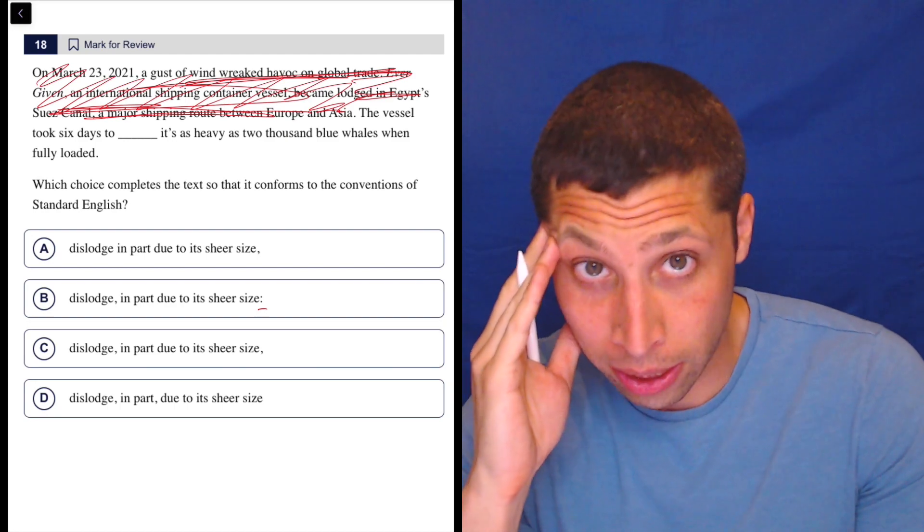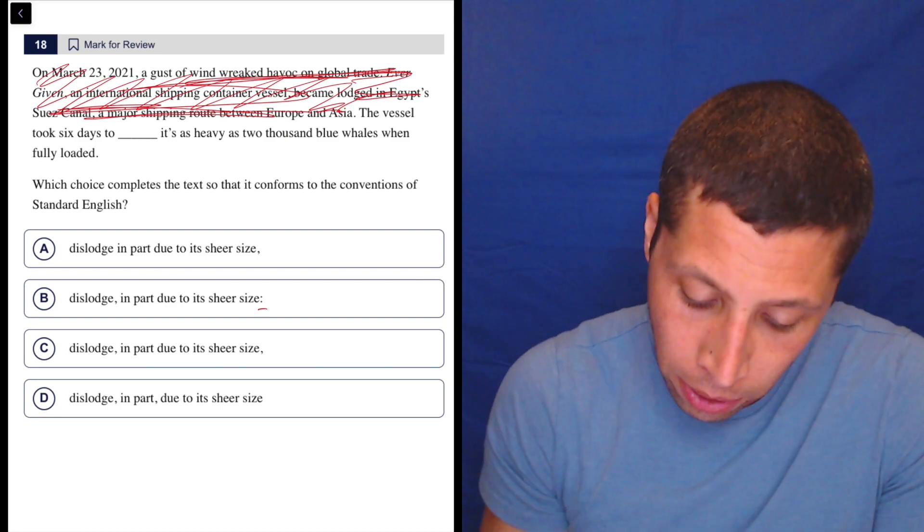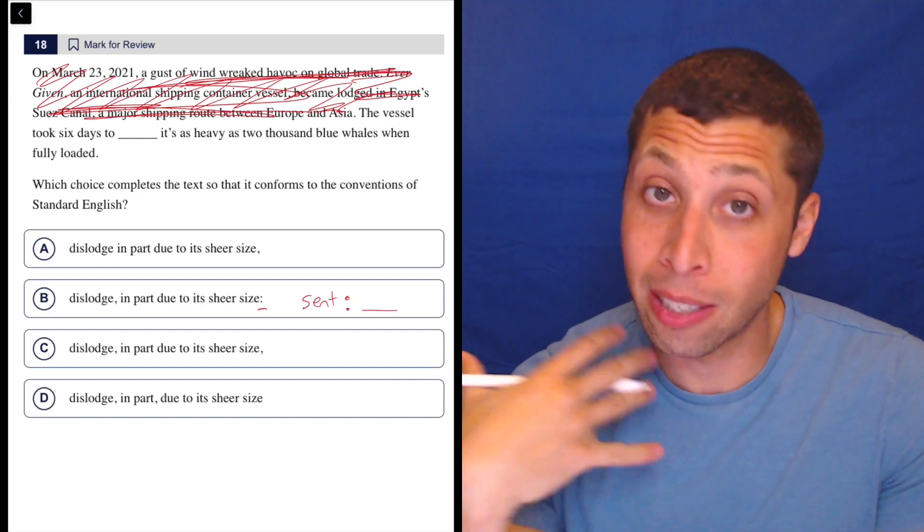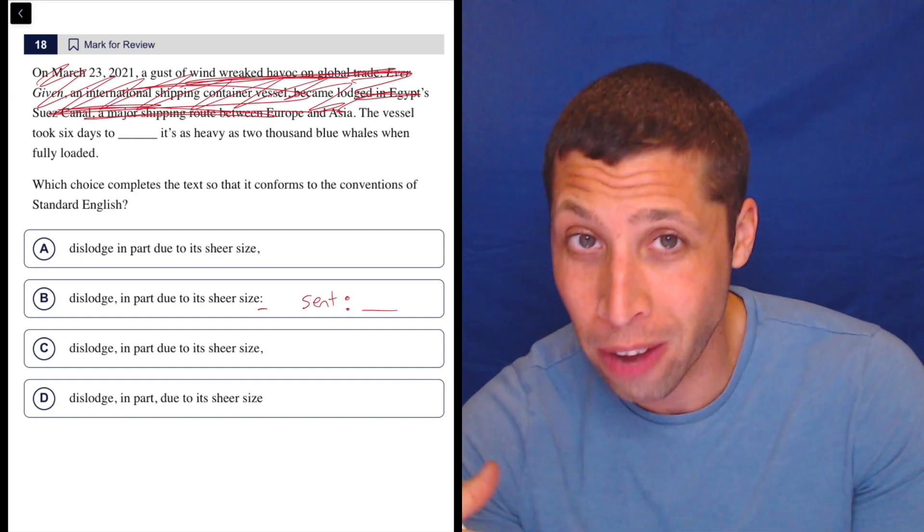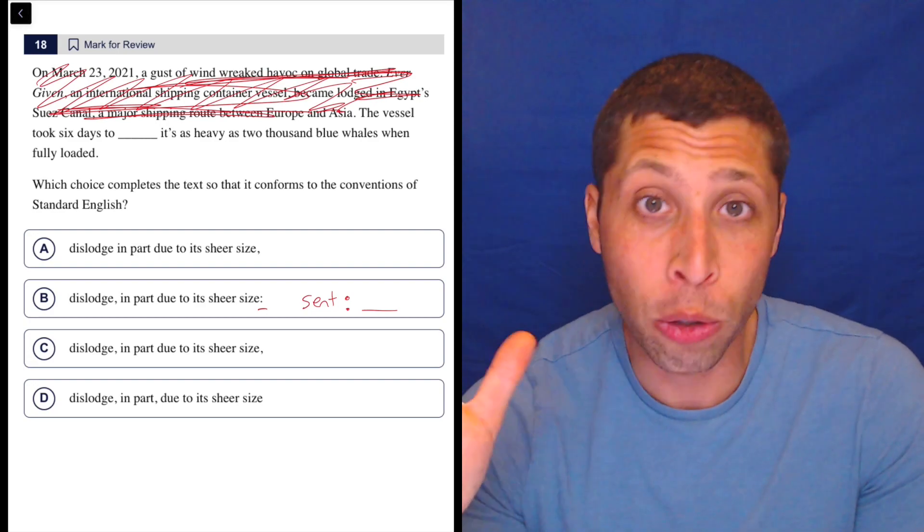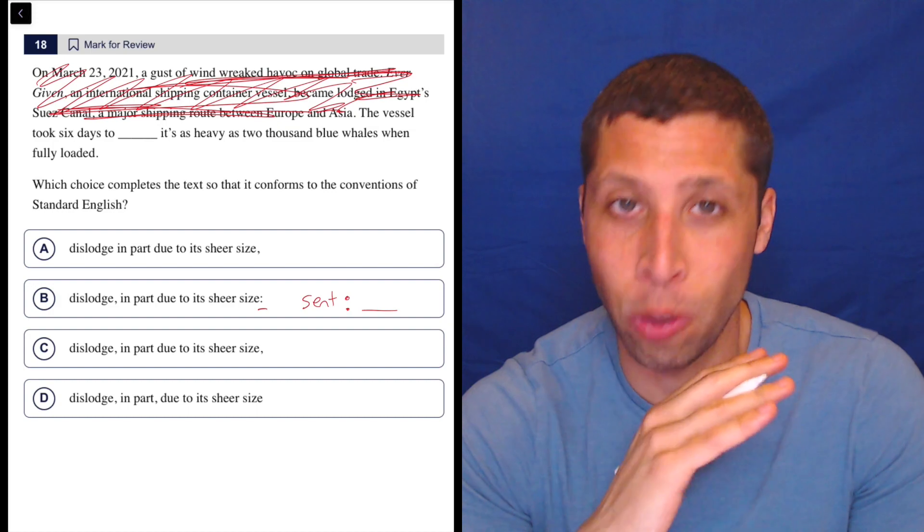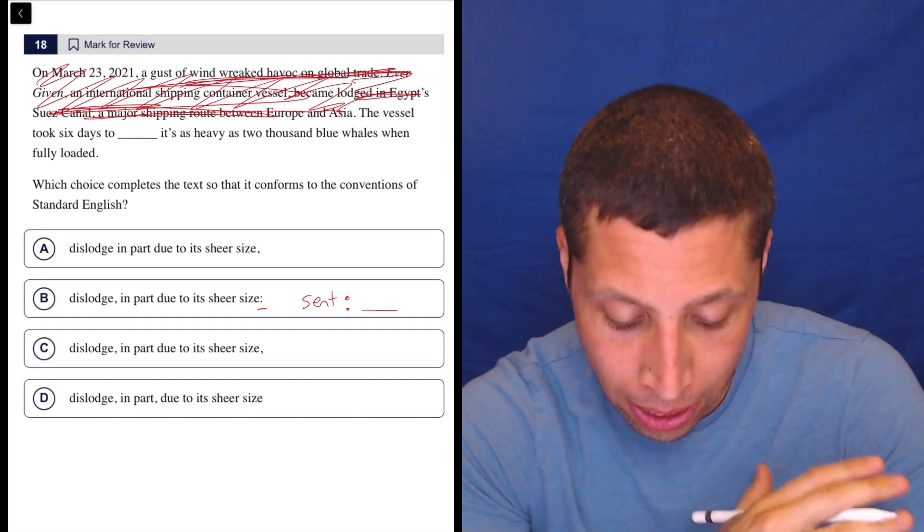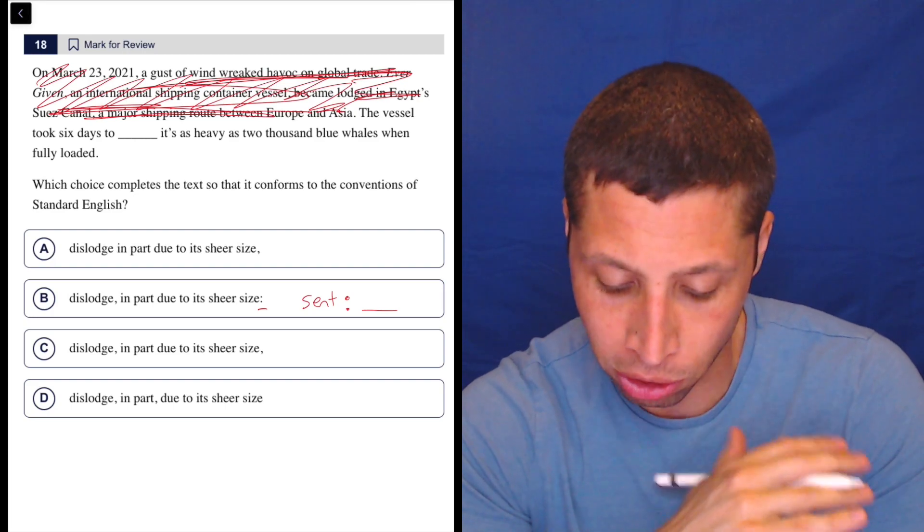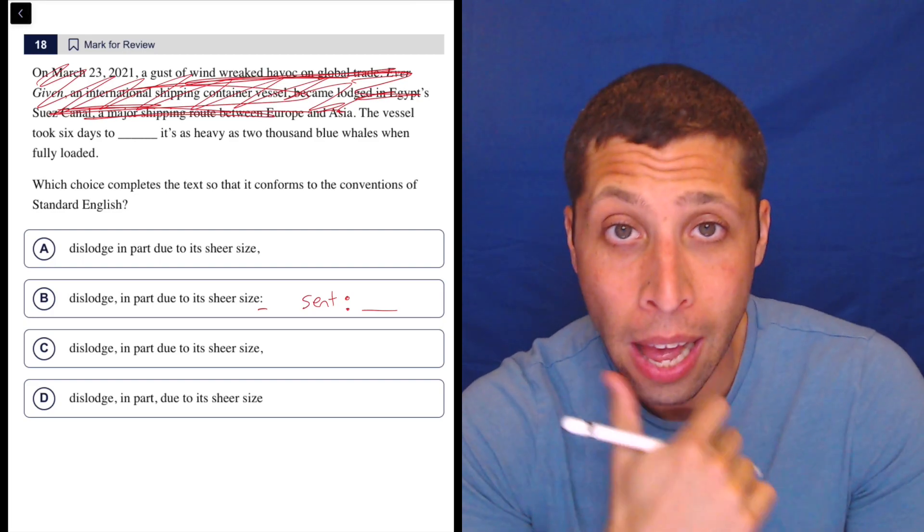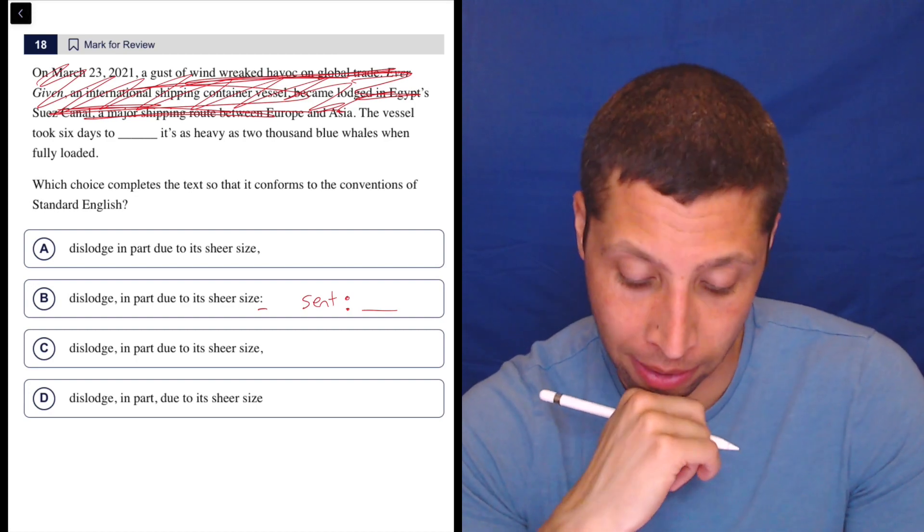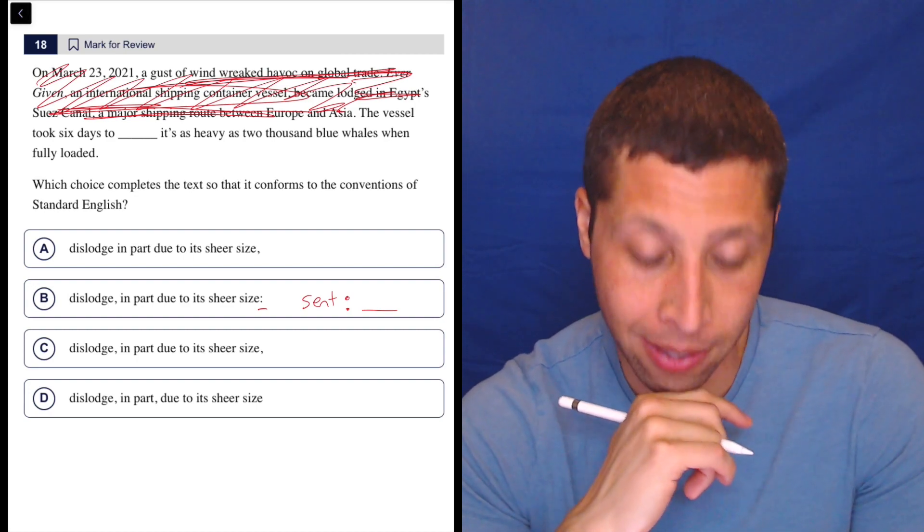So because the colon is in choice B, that's kind of my first move. In order to use a colon, we need to have a sentence before it. We have some flexibility with what comes after. We could have another sentence, we could have a list, we could have just one word. So we have a lot of flexibility. But in order to use one, I would need to test, do I at least have a sentence beforehand? So let's just read up to that part. The vessel took six days to dislodge, in part due to its sheer size. Yeah. Well, the last part there is maybe extra, but the first part seems like a sentence.